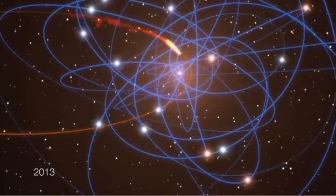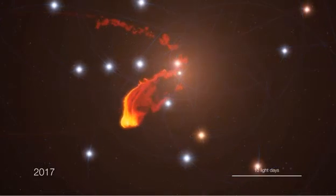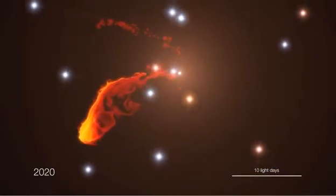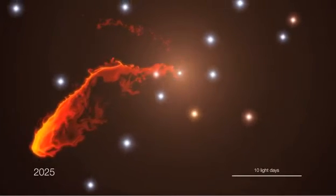No one knows what will happen next. The cloud will probably heat up and may start to emit powerful X-rays as it gets disrupted. In the end, the material will eventually disappear by falling into the black hole.